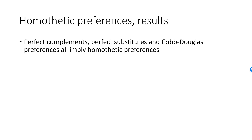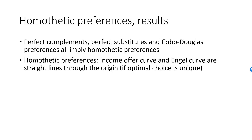A quick summary of what we know about homothetic preferences. Homothetic preferences is a class of preferences that contains Cobb-Douglas preferences and preferences representing goods that are perfect complements and perfect substitutes. Not all preferences are homothetic — for example, quasi-linear preferences are in general not homothetic. If preferences are homothetic, then the proportion of income spent on each good is constant and independent of income, meaning neither good is a luxury nor a necessity. This means that income offer curves and Engel curves are all straight lines through the origin.